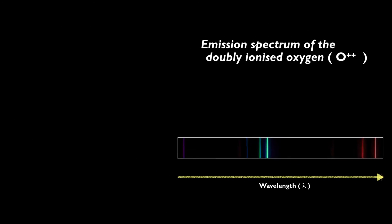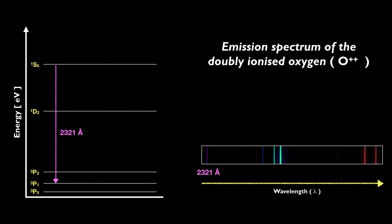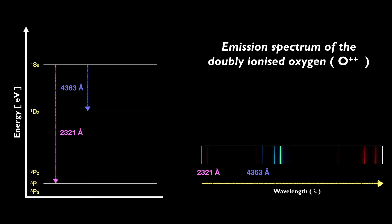We can't observe these lines on Earth because they are only created under the extremely low densities of nebulae. The energy level configuration of the O++ ion is much more complex than that of the hydrogen atom. But using atomic physics, we can establish five main energy levels in the O++ ion. An electron jumping from the top level to the second one will emit an ultraviolet photon. The electronic transition producing the 4363 Angstrom emission is quite important, as it is key to estimating the electron temperature of the gas. The two main emission lines of the O++ ion are at 4959 Angstroms and 5007 Angstroms, and by atomic physics they are in a perfect ratio of 1 to 3. These are the two bright lines identified as Nebulion by Margaret and William Higgins.